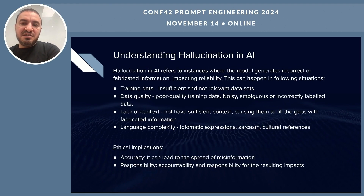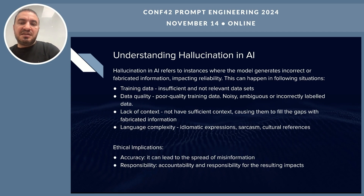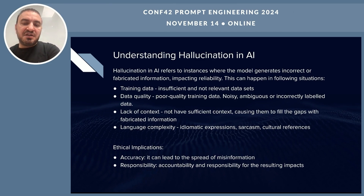For hallucination, this is a common term used in the AI world when a model generates incorrect or fabricated information. This can happen for several reasons. Similar to bias, training data plays a key role — low-quality data can cause AI models to hallucinate and provide fabricated misinformation. Lack of sufficient context also causes issues, and complex language inputs like sarcasm or cultural references can be difficult for AI models to understand. In those cases, AI models fill the gaps with fabricated information, which can lead to misinformation and reduced reliability in AI systems.